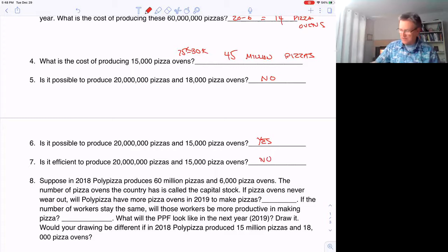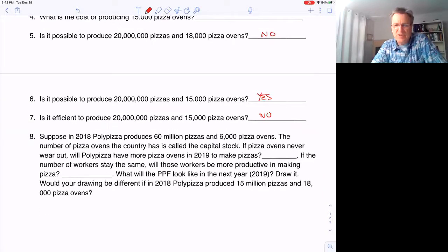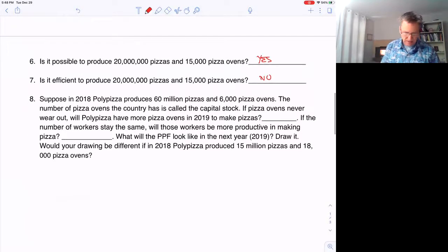So on the next question, it's possible but it's not efficient. That means if we're inside the PPF, there are some workers that aren't making pizzas and some pizza ovens that aren't being used. The key here is that there's some idle resources that aren't being used if we're inside the PPF.